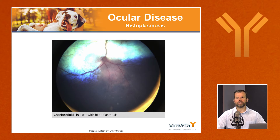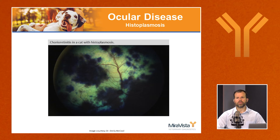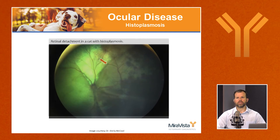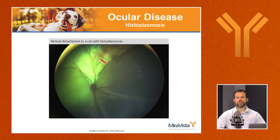Here is an image of the posterior segment of a cat with chorioretinitis — you can see a grayish discoloration of the non-tapetal fundus starting at the optic nerve. Another example shows chorioretinitis in the tapetal part of the fundus in a cat with disseminated histoplasmosis. There is also a case of retinal detachment, where the retina is visibly bubbling forward, with only a small pie-shaped sliver of attached retina remaining at the top.